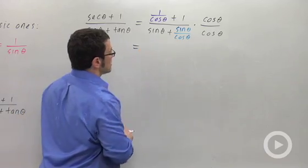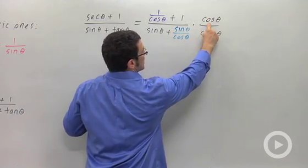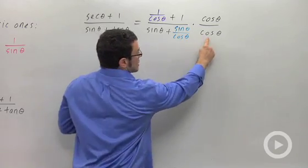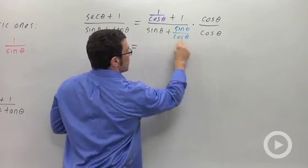Now remember, when I do this, this cosine theta is going to be multiplied across both of these terms. And this cosine theta will be multiplied across both of these terms.